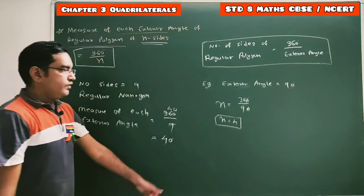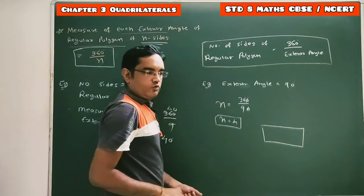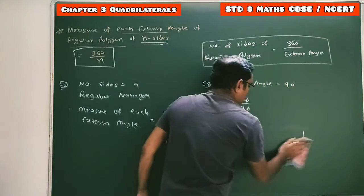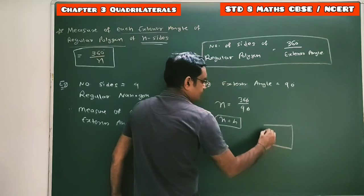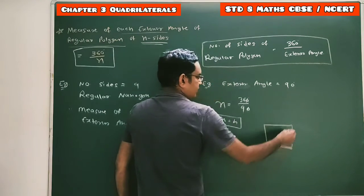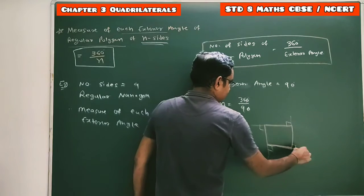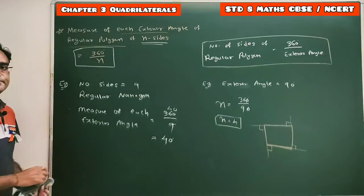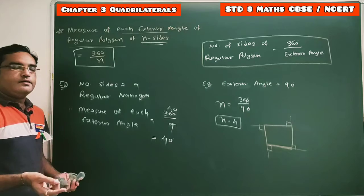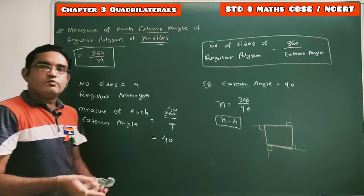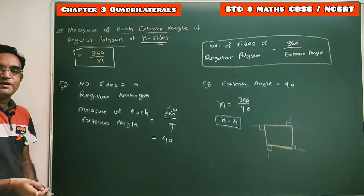A regular polygon with four equal sides is nothing but a square. So a regular polygon with all four sides equal is a square, and for this case the measure of each exterior angle is 90 degrees. This is how we can find the total number of sides when the exterior angle is given, and the exterior angle when the number of sides is given, using these two formulas.